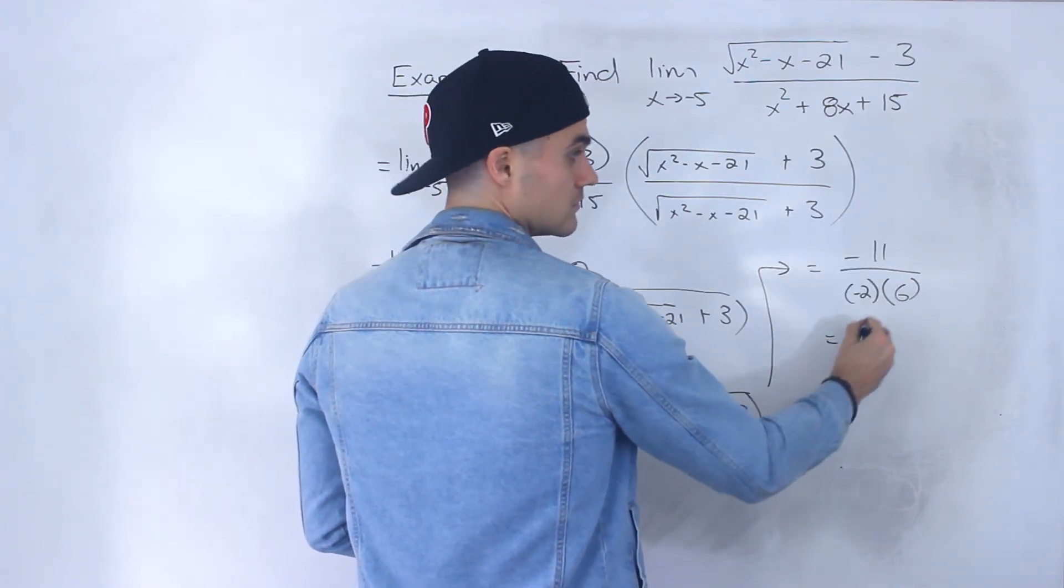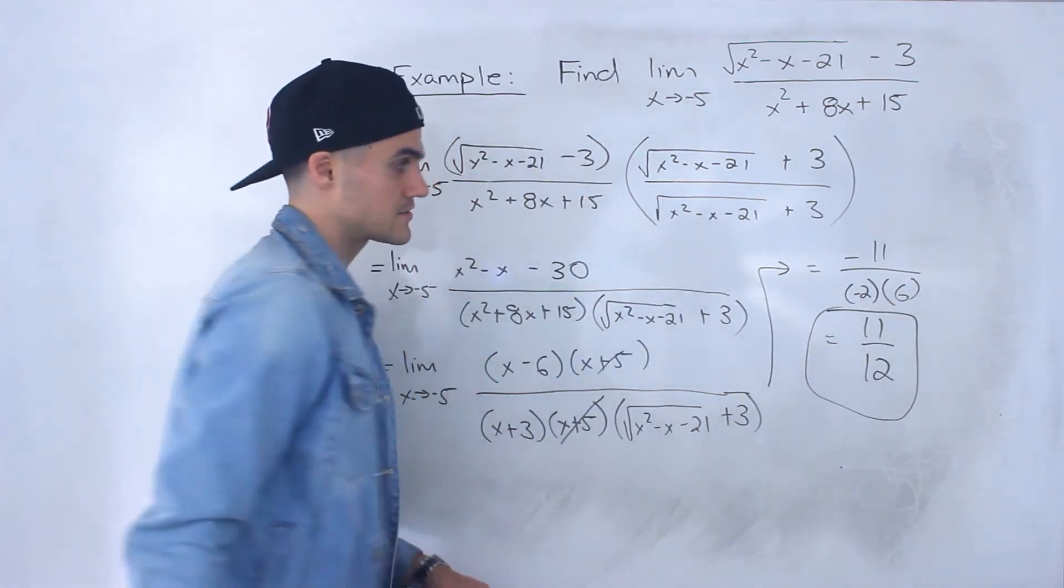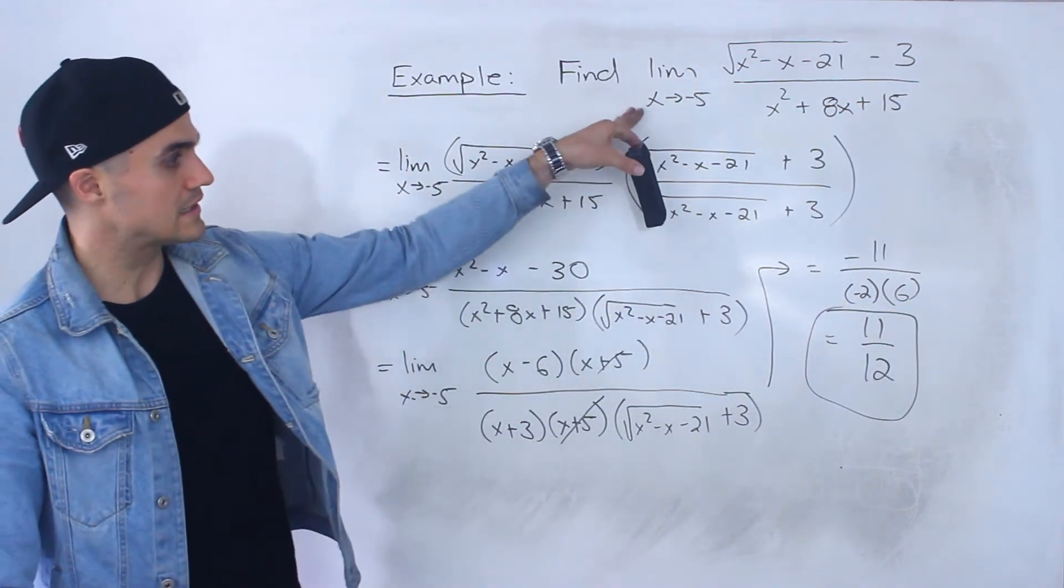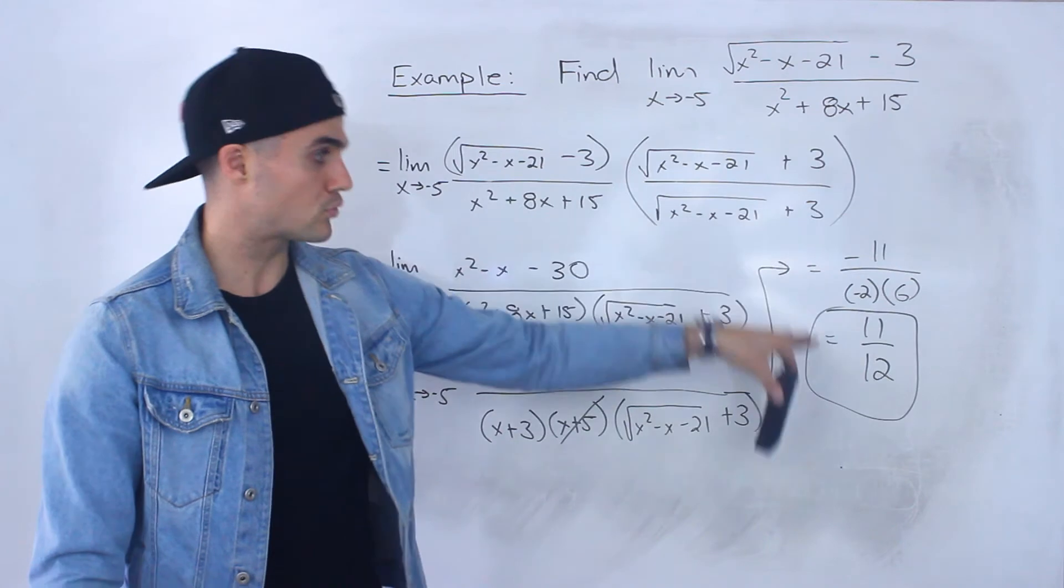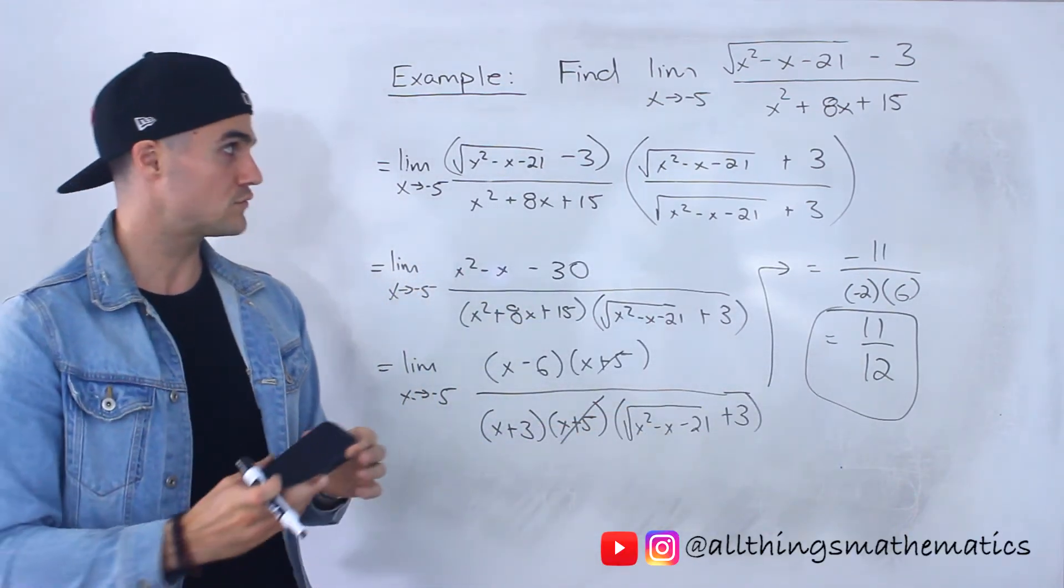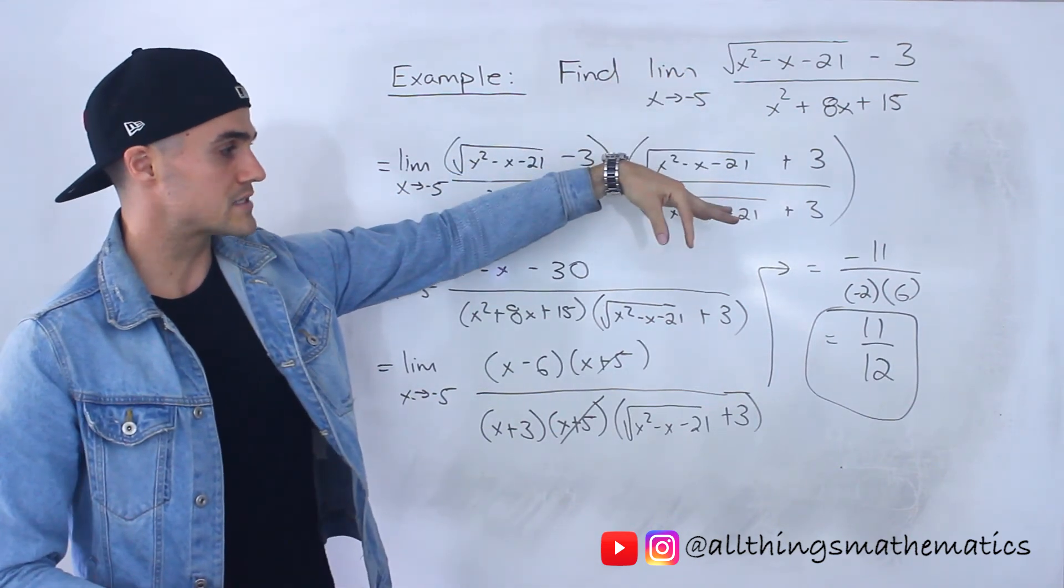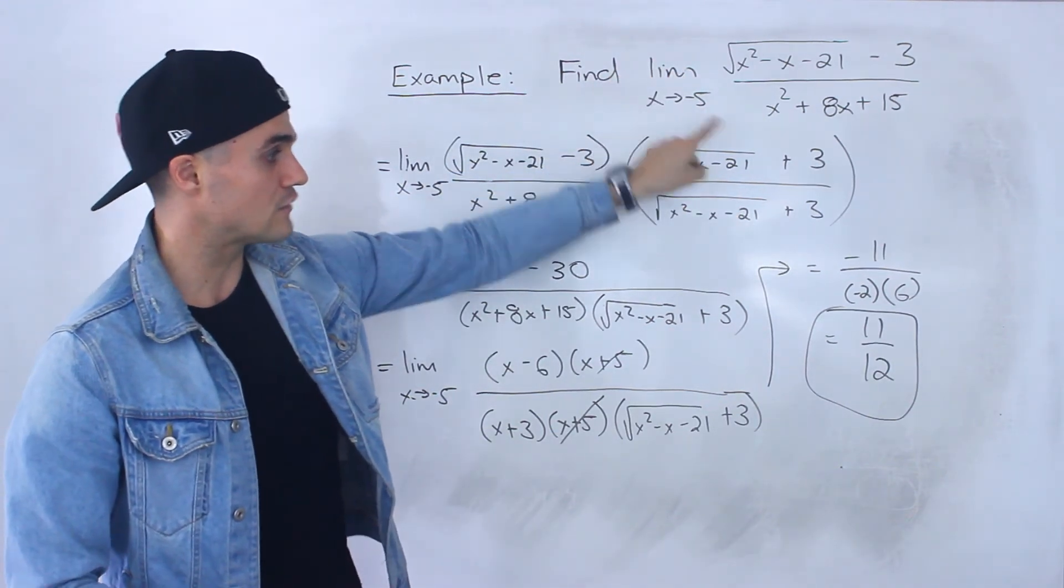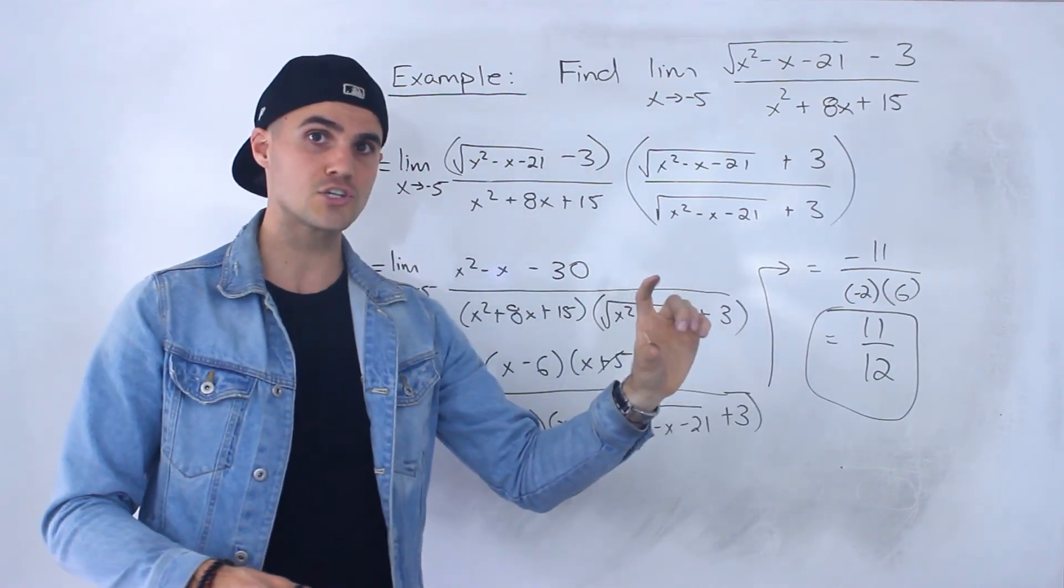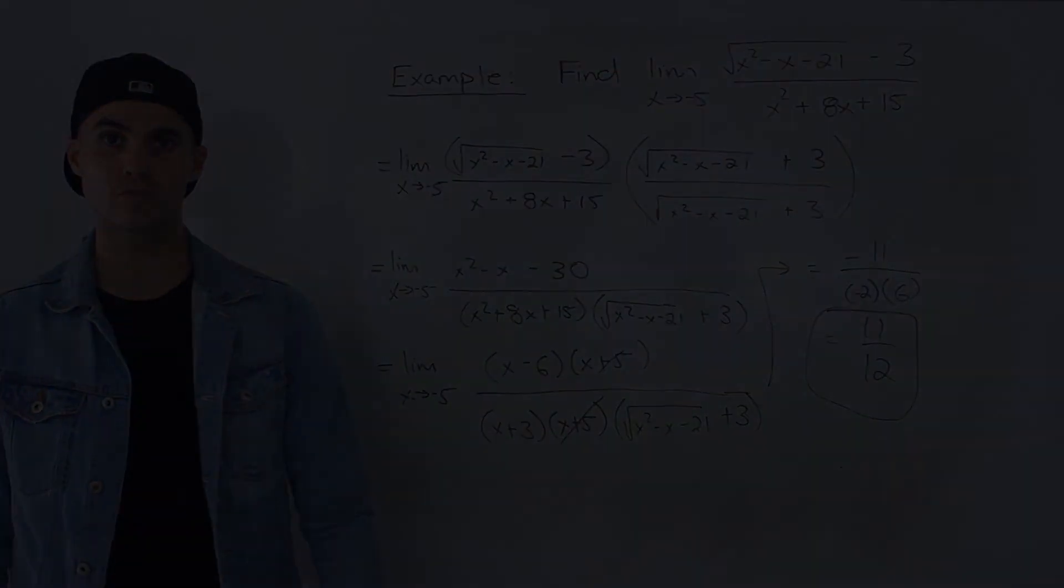And so the negatives cancel out, 11 over 12 is your final answer. So this limit approaches 11 over 12. That's going to be a hole in the function if you were actually to take this and graph it. It would be a pretty intense graph, but basically at that x value of negative 5 there's going to be a hole. But the location of the hole, the location of the y value is going to be at 11 over 12.